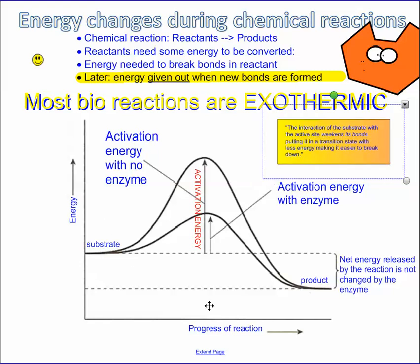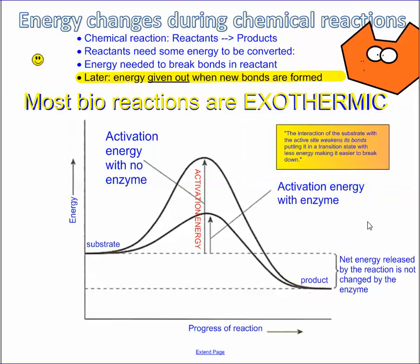You should be able to recognize a graph that looks like this. If the products end up at a higher energy level, then we call that an endothermic reaction. But for most biological reactions, you're going to end up with a graph where the final state is at a lower energy level than the initial level that we started off with.